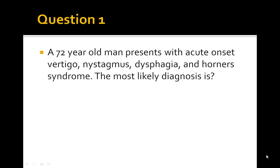Let's review this question. A 72-year-old man presents with the acute onset of vertigo, nystagmus, dysphagia, and Horner's syndrome. What is the most likely diagnosis? The patient is presenting with some key words. What can cause vertigo? Well, there are several things: benign positional vertigo, Meniere's disease, viral labyrinthitis, acoustic neuromas — all these can cause vertigo, so those are four things on our differential.